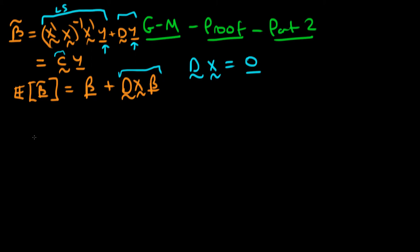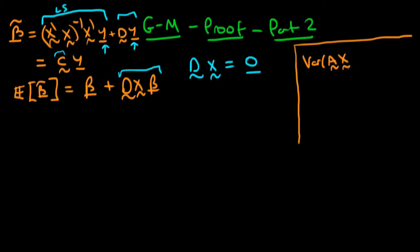Now what we have to do is find an expression for the variance of our estimator beta tilde. In doing so, we're going to make use of a few general matrix results. One of them is that the variance of any matrix A times a stochastic matrix X is just equal to A times the variance of X times A primed, where A primed is the transpose of A.